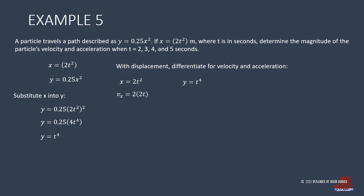Velocity in x is the derivative of 2t², which is 4t. Vy is the derivative of t⁴, which is 4t³. For acceleration, ax is the derivative of 4t, which is 4, and ay is the derivative of 4t³, which is 4 times 3t² or 12t². With vx, vy, ax, and ay already determined, the magnitude of velocity is the root of vx² plus vy², and the same approach applies for acceleration.